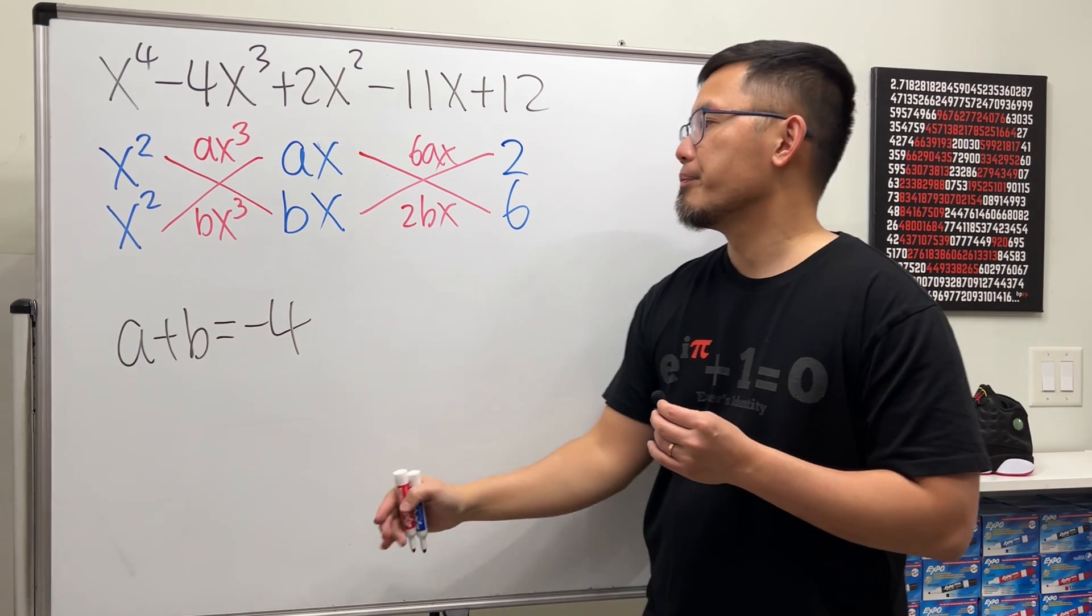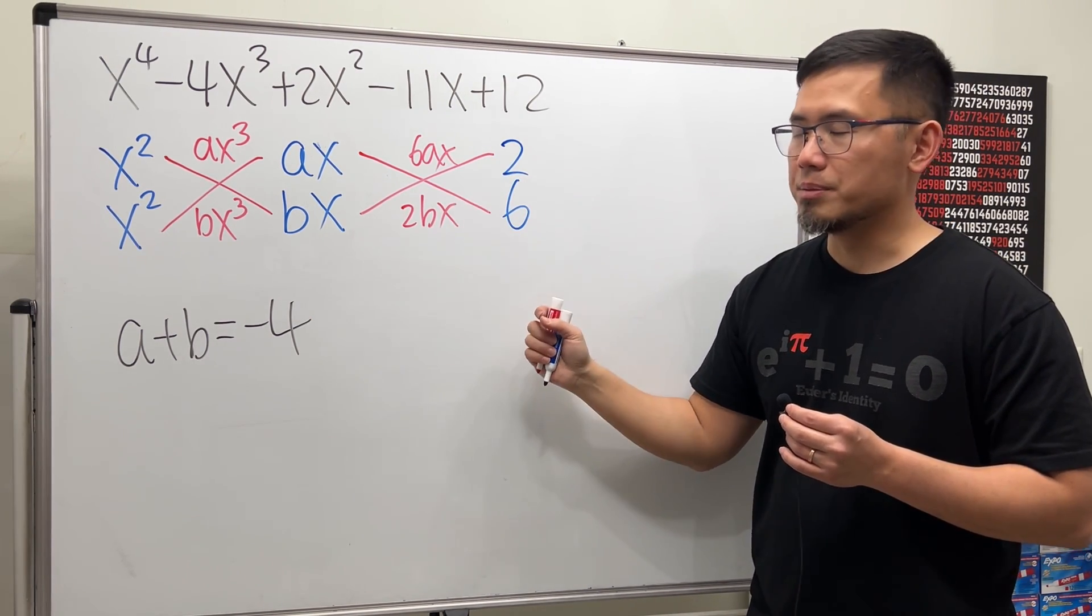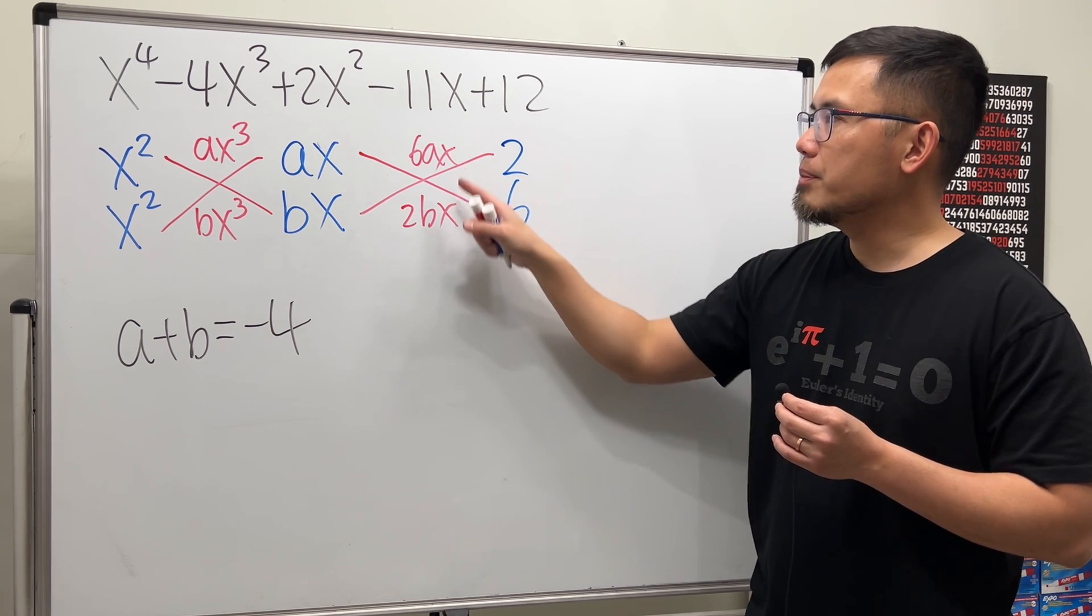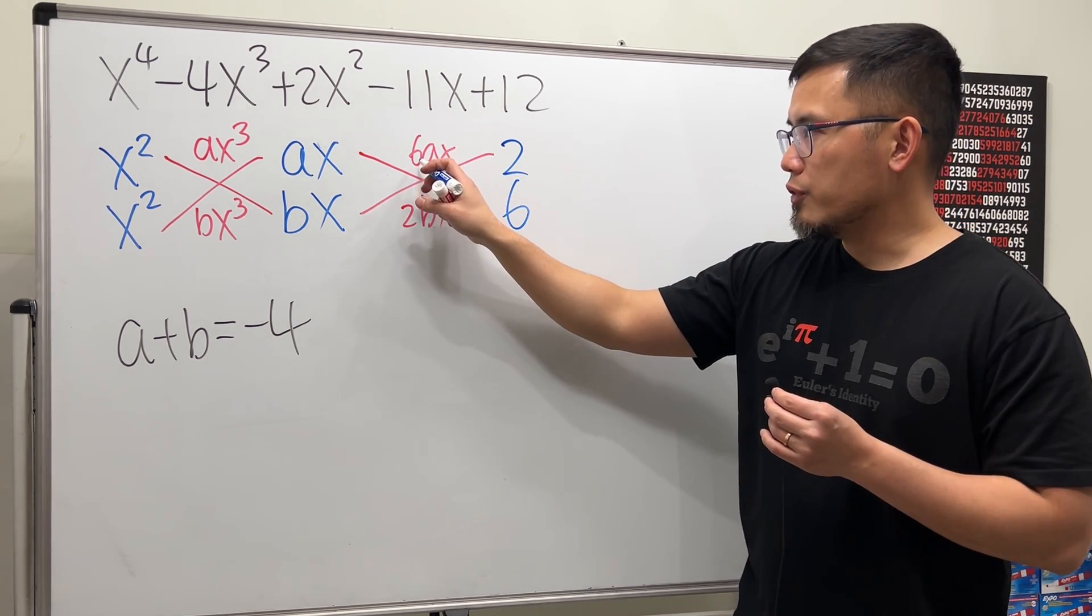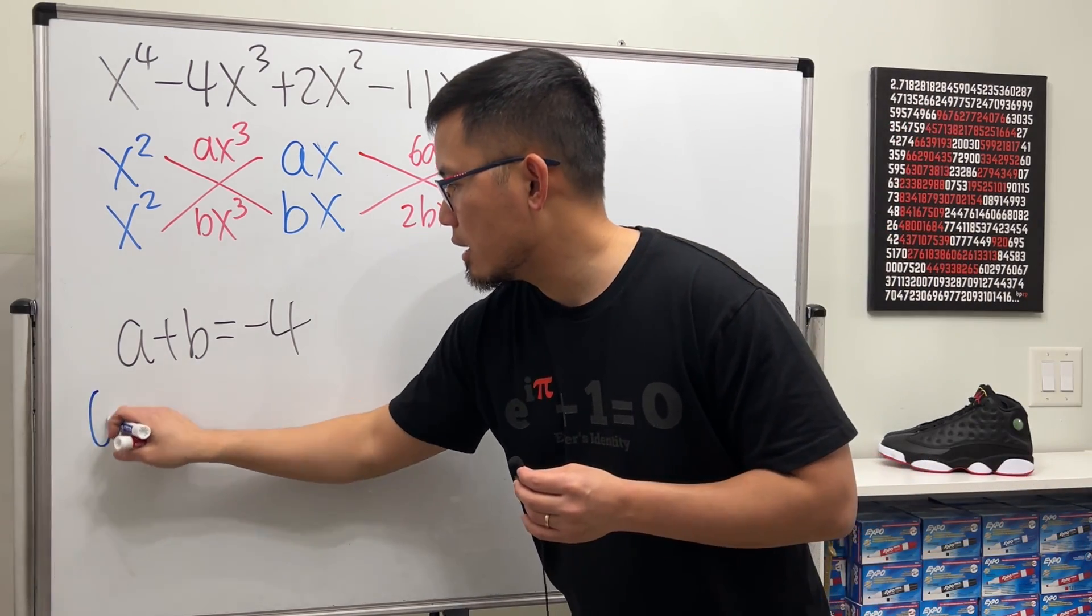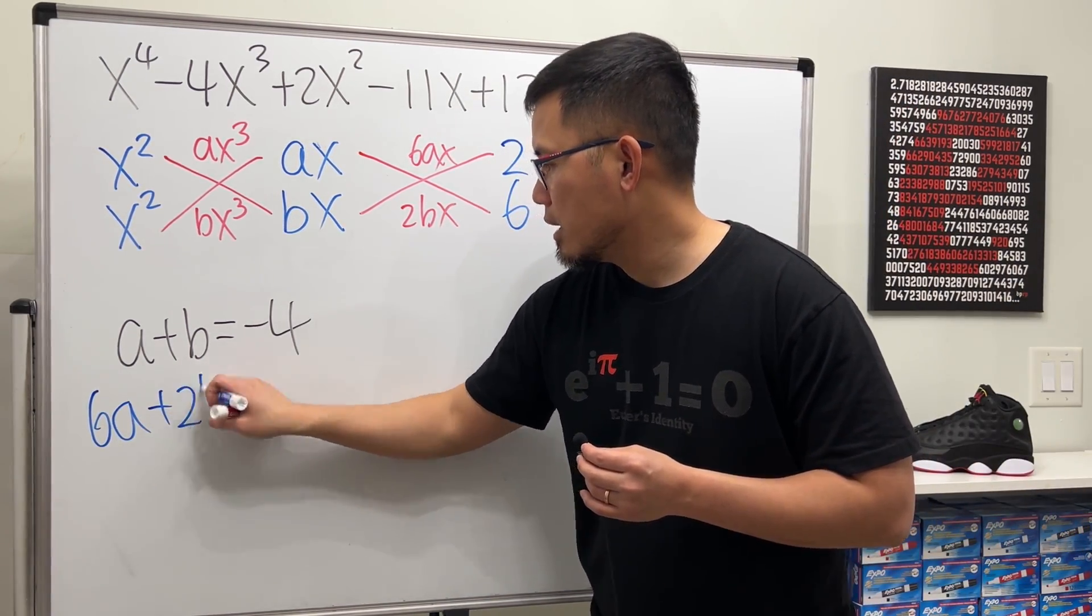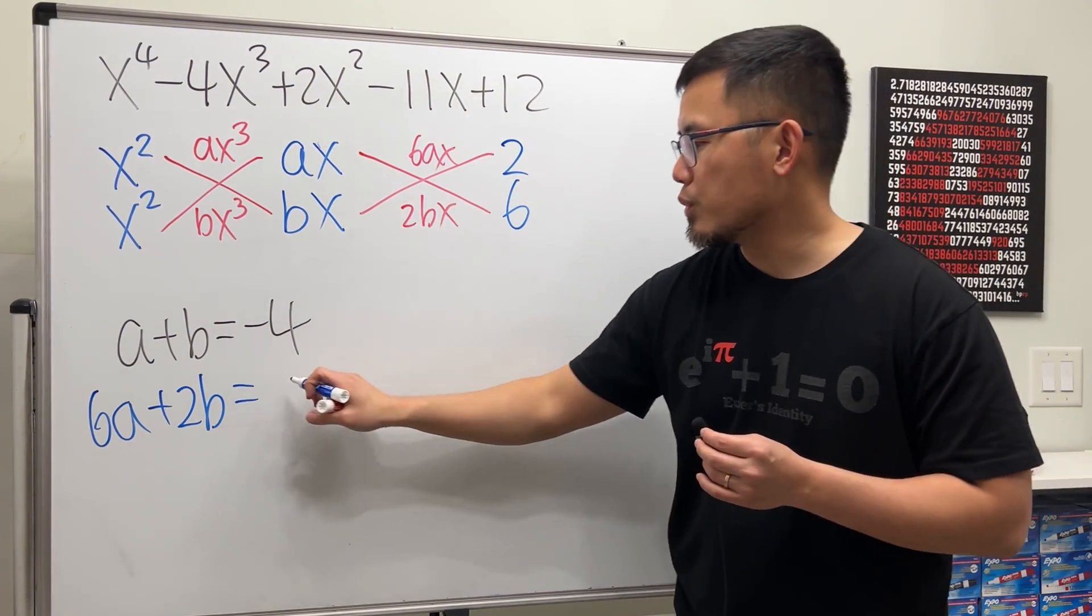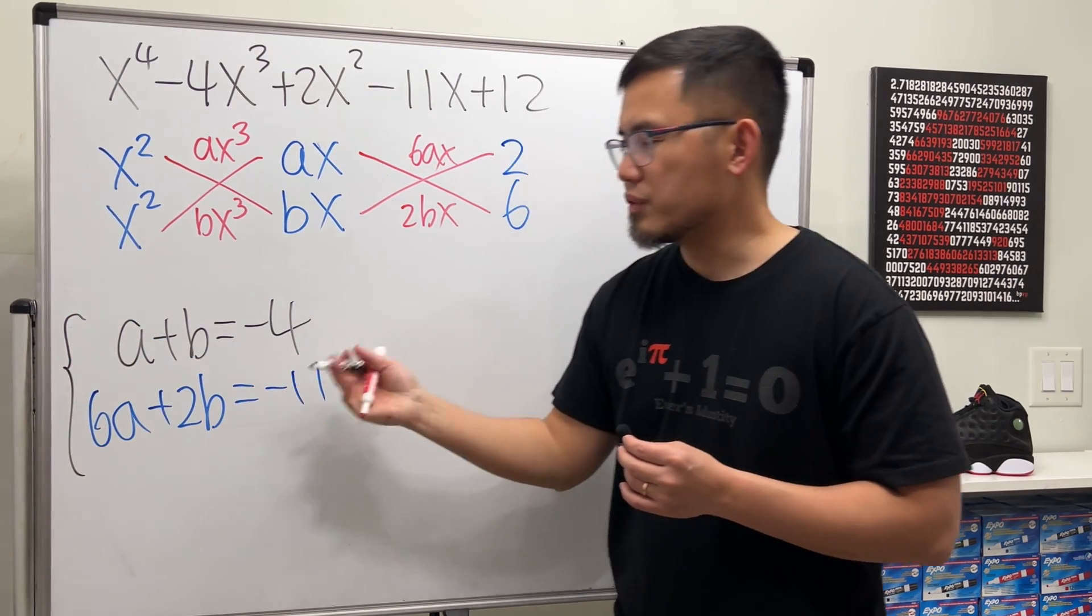Similar to what we did right here, this time, this and that are the only two x terms. So when we combine them, we must get this right here. So in another word, the coefficient 6a combined with the coefficient 2b must be equal to this coefficient, which is negative 11. And now we have a system of equations, and we can solve this.